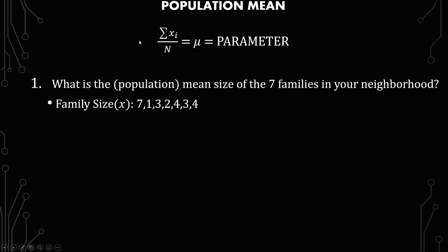The first example is: what is the population mean size of the seven families in your neighborhood? So you live in a neighborhood with seven families. What is the average size of those families? It's going to be a population mean because you just have seven families in your neighborhood.